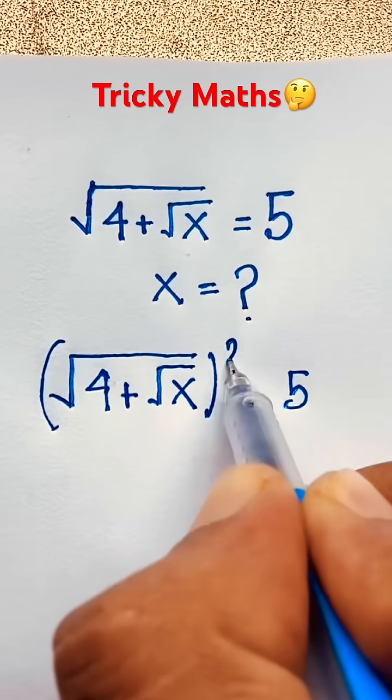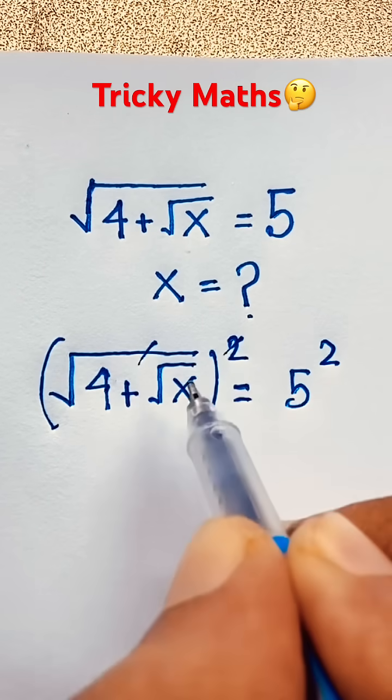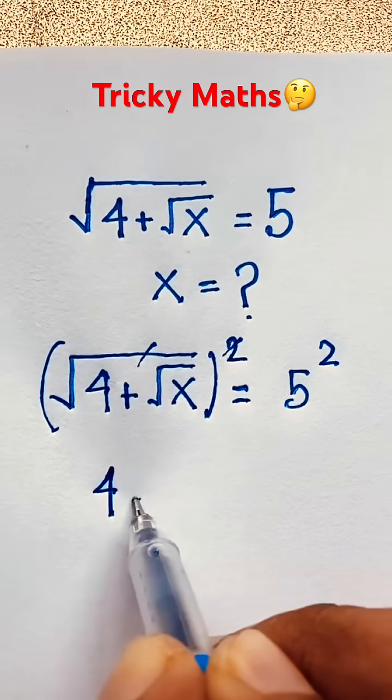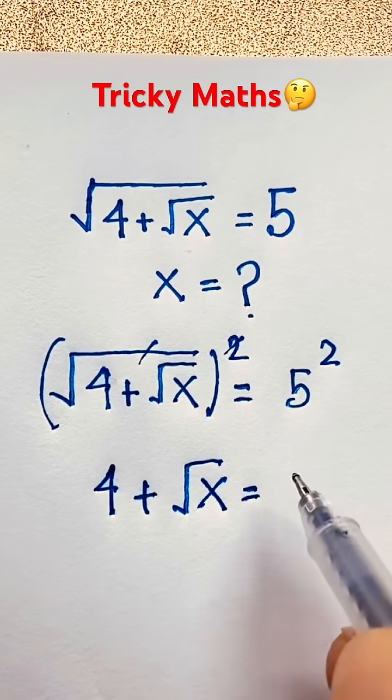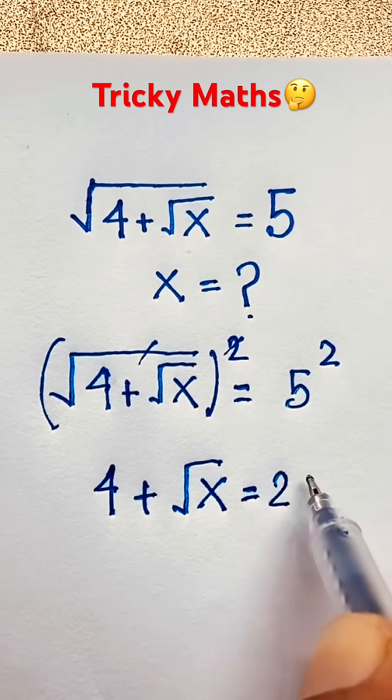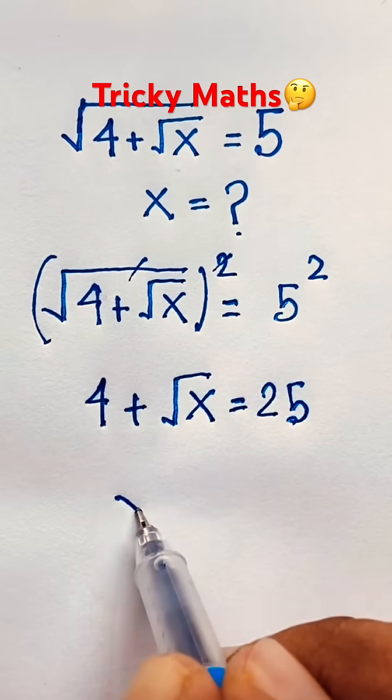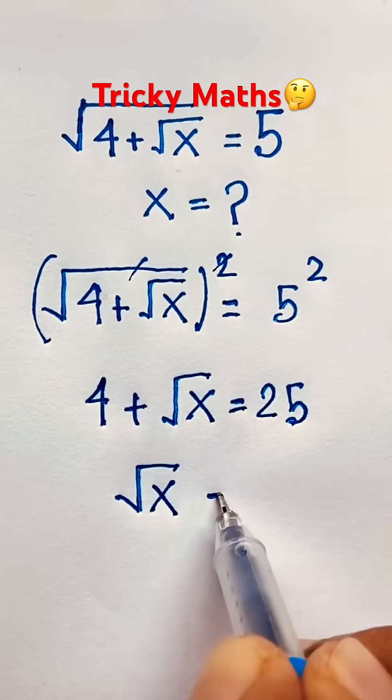I use both sides whole square, then square root is canceled out. We find out 4 plus square root x, then 5 to the power 2, it will be 25.